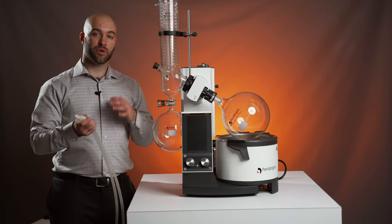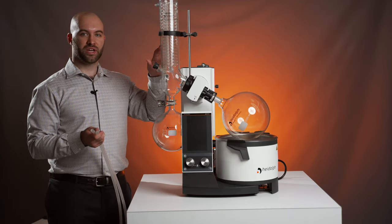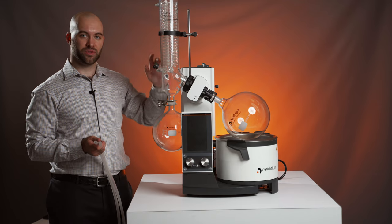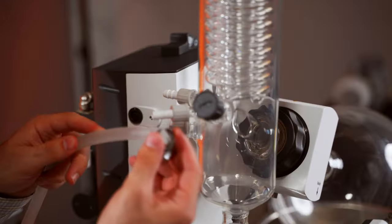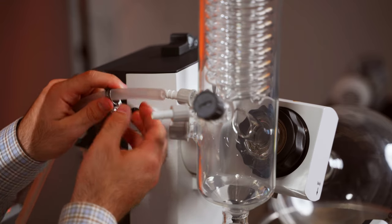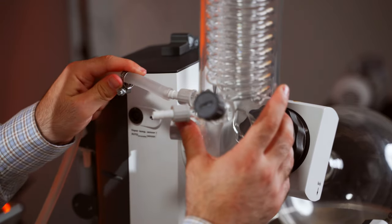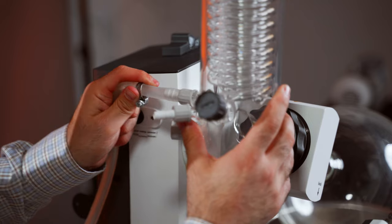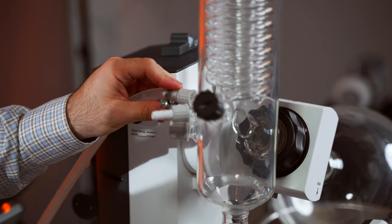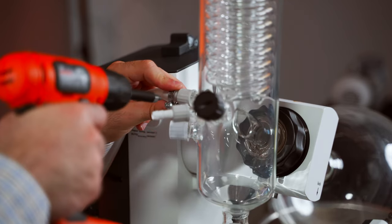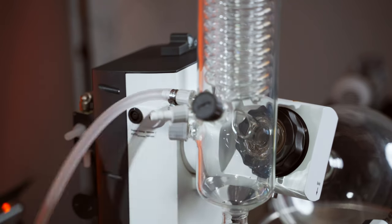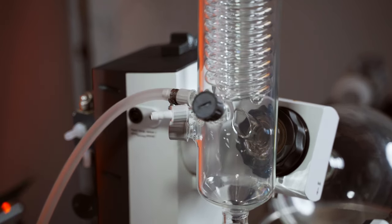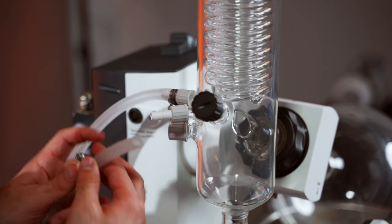Now we're going to attach the tubing that we just attached to our chiller to our condenser and due to its dual coil design, it doesn't matter which of these two connections is in or out. We're going to put the clamping ring over the tube first, slide the tube over the barbed connector, bring up the ring clamp and clamp it down. We'll do the same thing with our second piece of tubing.